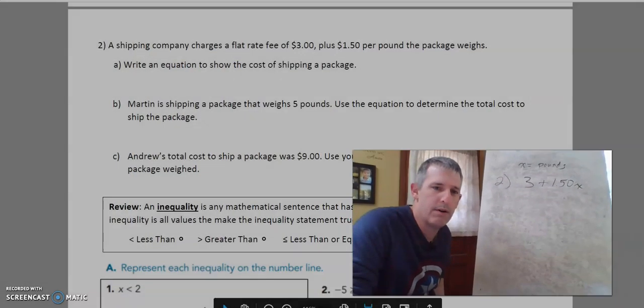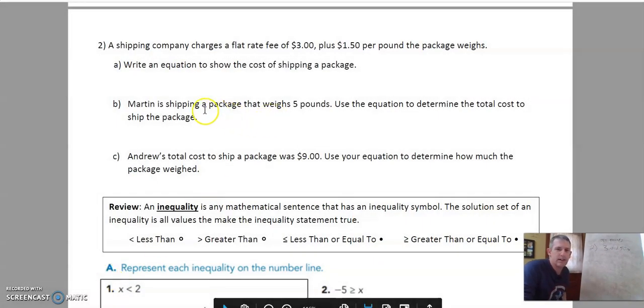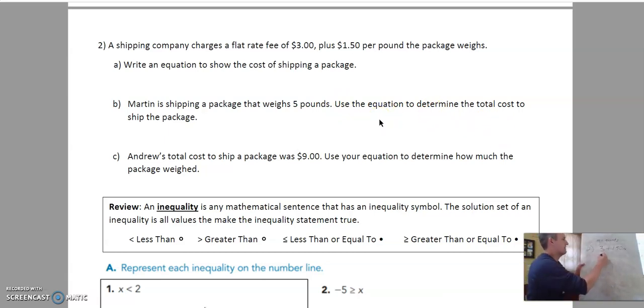All right now the rest of the problem wants us to figure out if Martin's shipping a package that weighs five pounds. Use the equation to determine the total cost to ship the package. Okay so if x now equals five we're going to do three plus a dollar fifty. Remember when you have a number next to a letter it means to multiply. So we're going to multiply a dollar fifty times five.